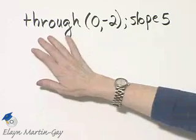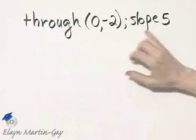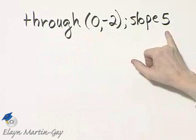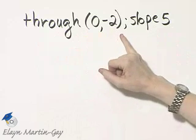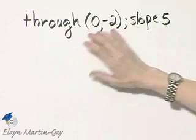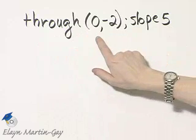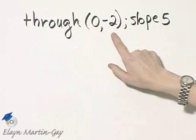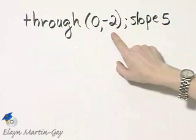Let's write an equation of the line that goes through this point and has this slope. Now notice you can use the point-slope form because you're given a point and you're given a slope, but we're given a particular point. Did you notice that this point happens to be the y-intercept?